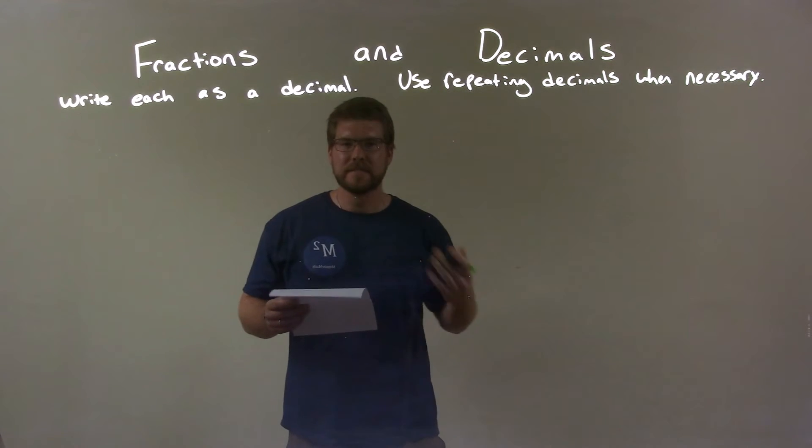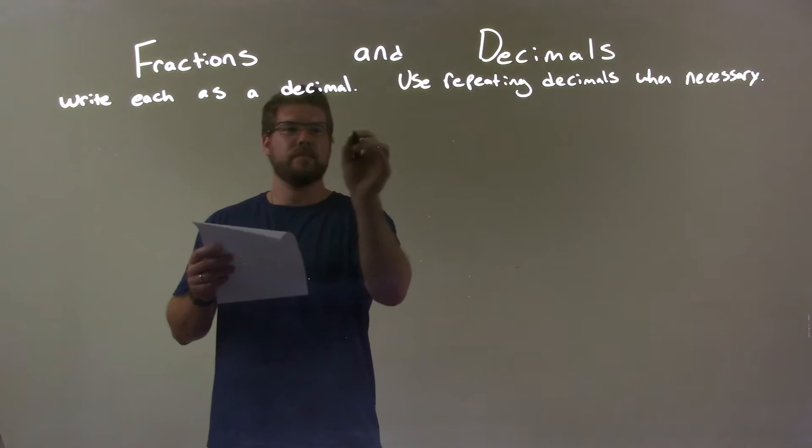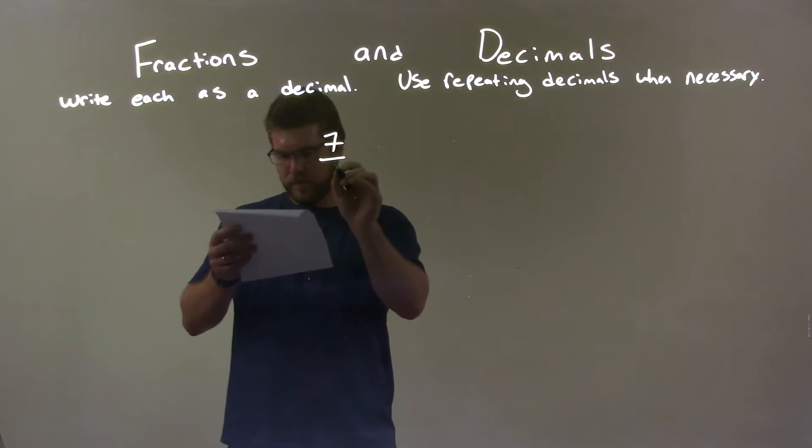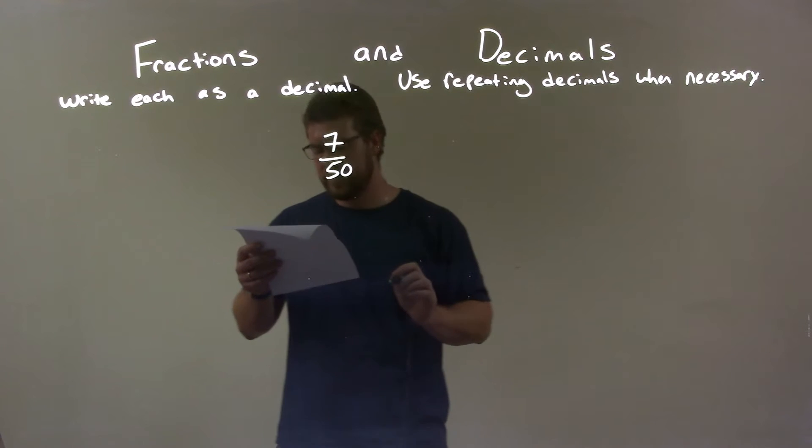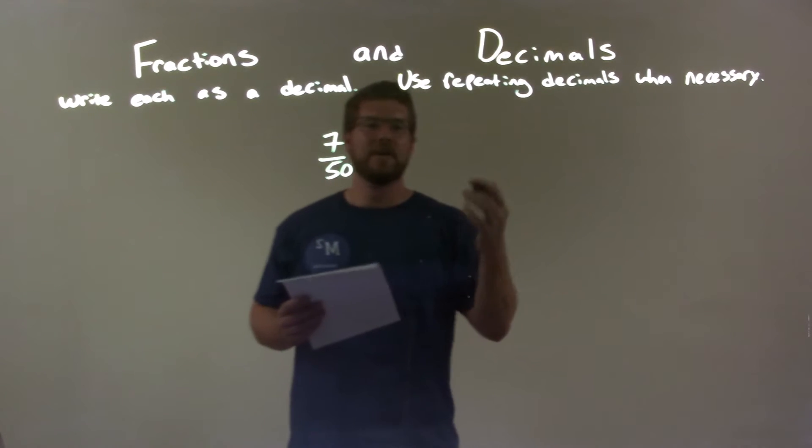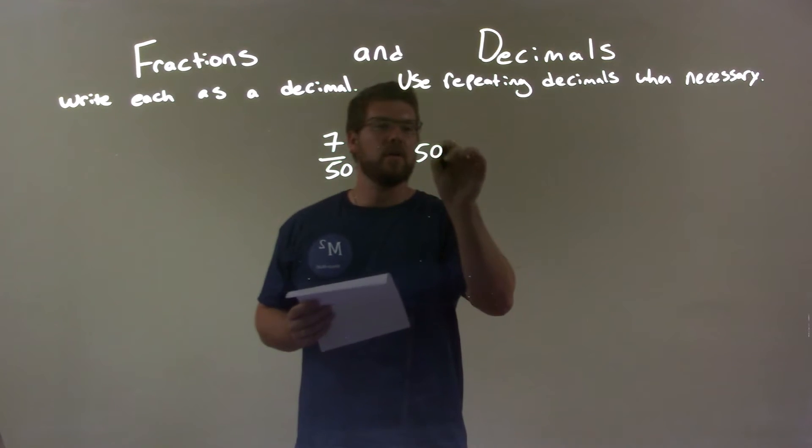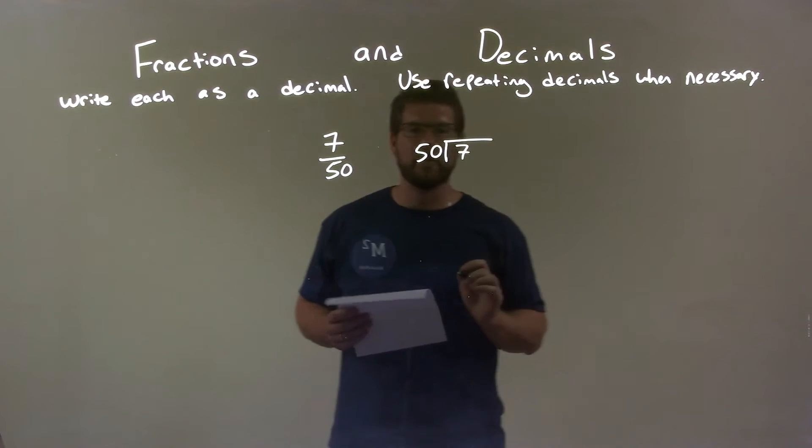So, if I was given this fraction, 7 over 50, we look at 50 into 7, so we have 50 goes into 7 using long division.